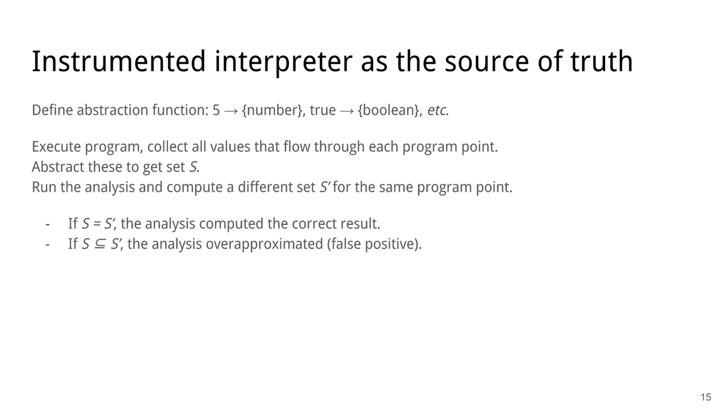If the set from the interpreter is a subset of the set from the analysis, it means that the analysis is over-approximated. So we have a false positive for that program point. If the set from the interpreter is a superset of the set from the analysis, it means that the analysis is under-approximated. So we have unsoundness in that case.